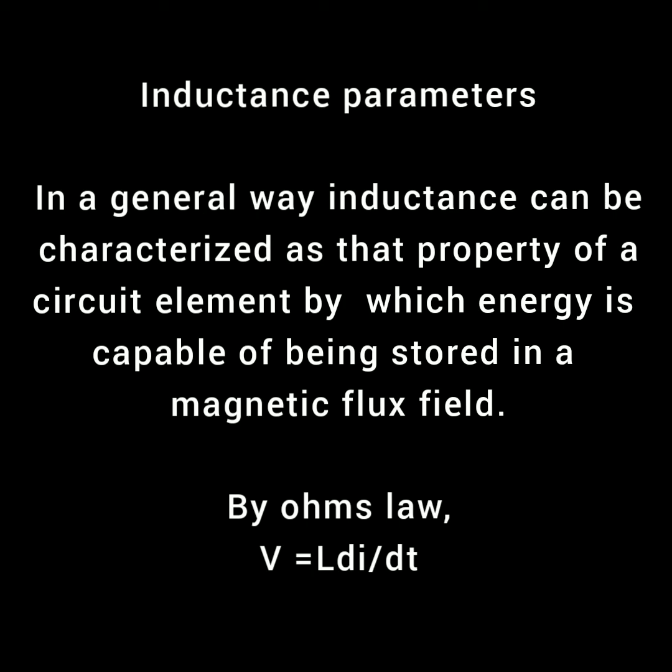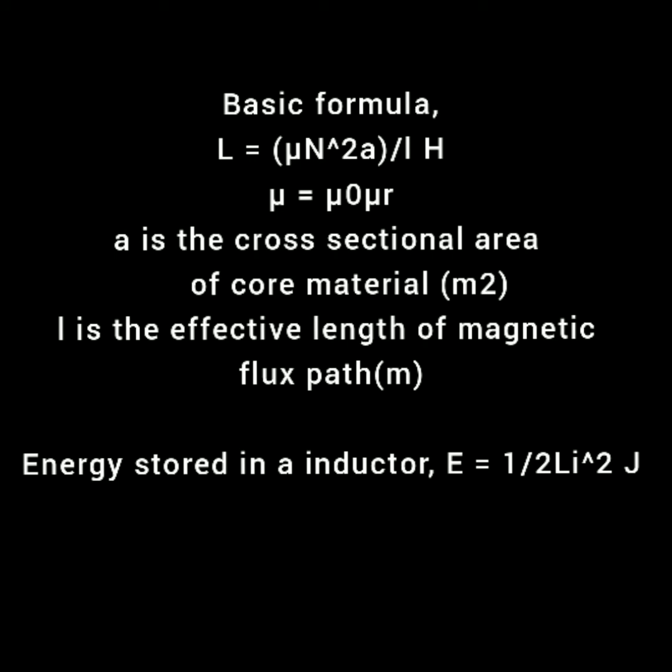By definition, the inductance is 1 Henry when current through the coil changing at the rate of 1 amp per second induces 1 volt across the coil. By Ohm's law, voltage V = L × di/dt. Inductance can be characterized as that property of a circuit element by which energy is capable of being stored in a magnetic flux field. The basic formula of inductance is L = μN²A/l, where μ = μ0 = 4π × 10⁻⁷ H/m, A is the cross-section area of core material in meters squared, and l is the effective length of the magnetic flux path in meters. Energy stored in an inductor is given by ½Li² joules.